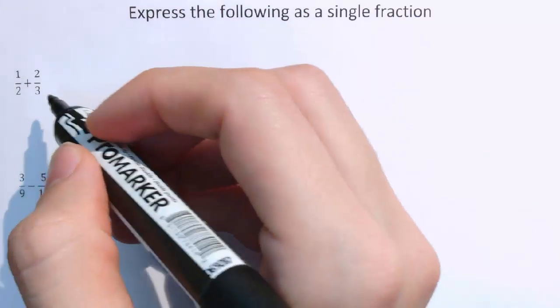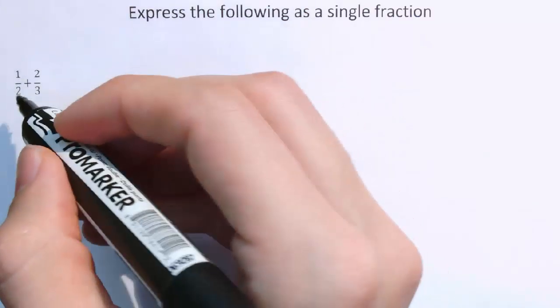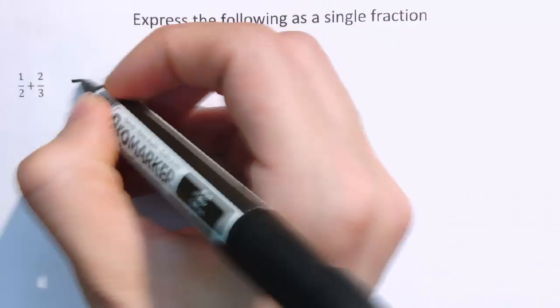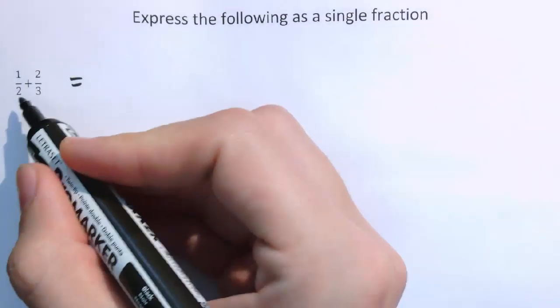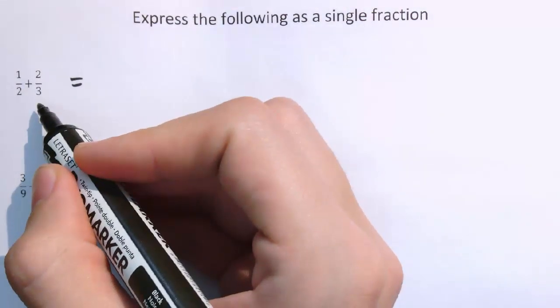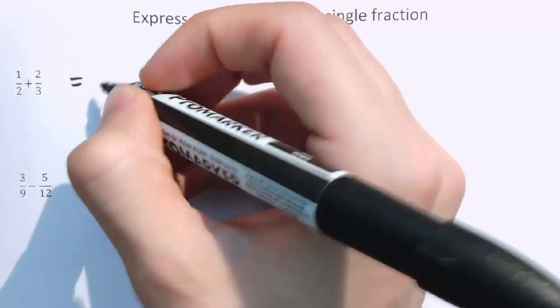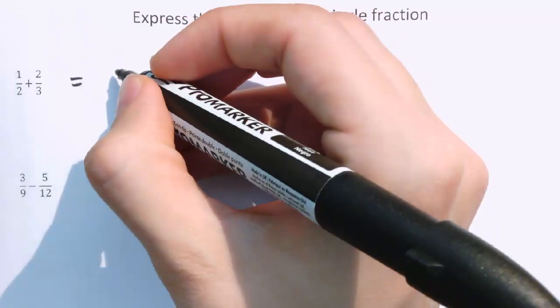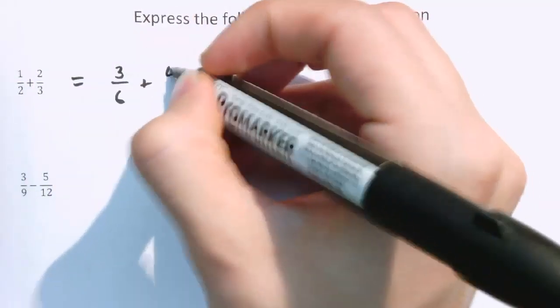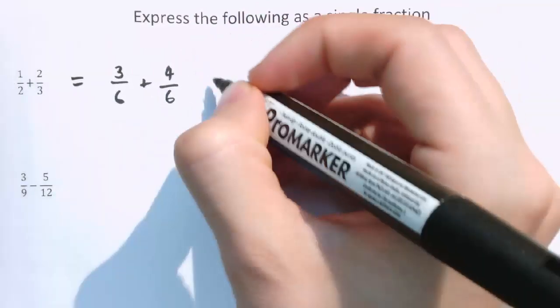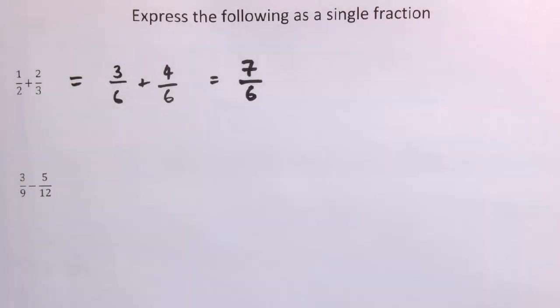One-half plus two-thirds. We want to put the fractions over a common denominator, and one way to get a common denominator is to just multiply the denominators of the two fractions we've got. So here, two times three is six. Multiplying the left one top and bottom by three gives three-sixths, and the right one top and bottom by two gives four-sixths, so then we just add the two top values together to give seven, and leave the bottom as six. We'll be doing exactly the same thing for algebraic fractions.